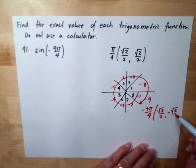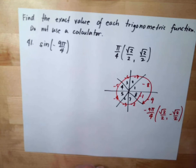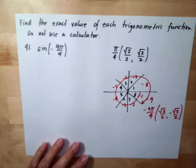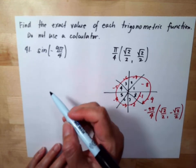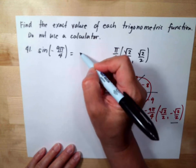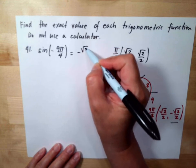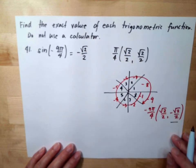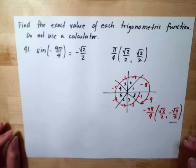So our answer here, because sine of the unit circle is y, and our y is negative square root of 2 over 2, so the answer will be negative square root of 2 over 2 for number 41.